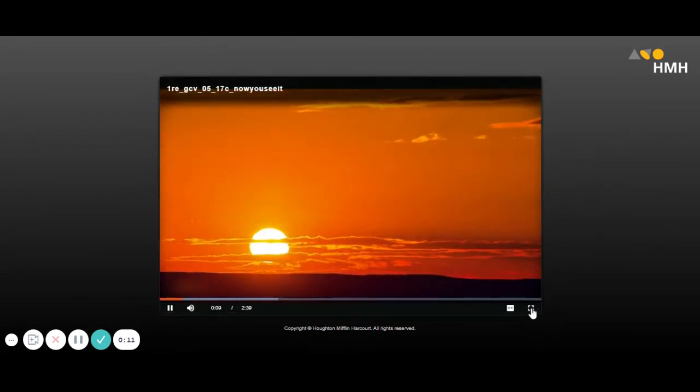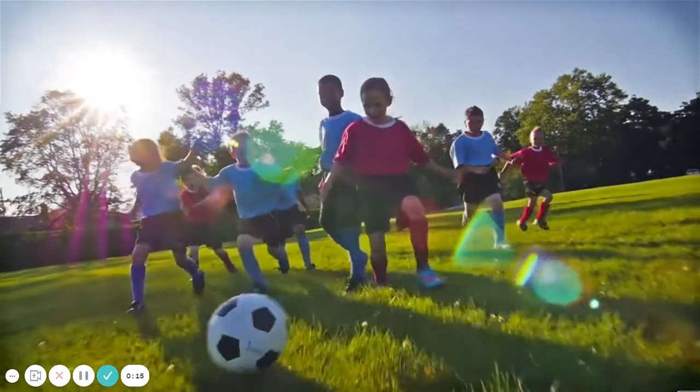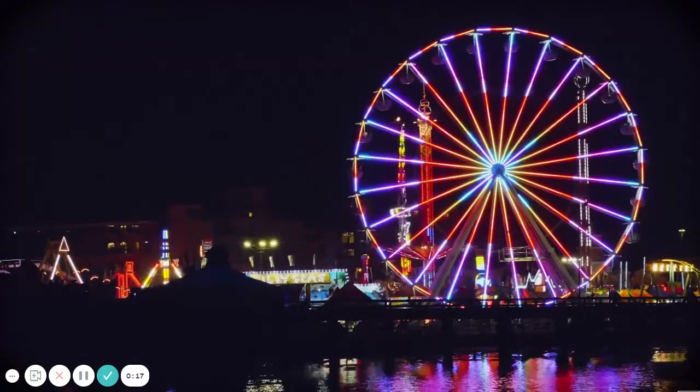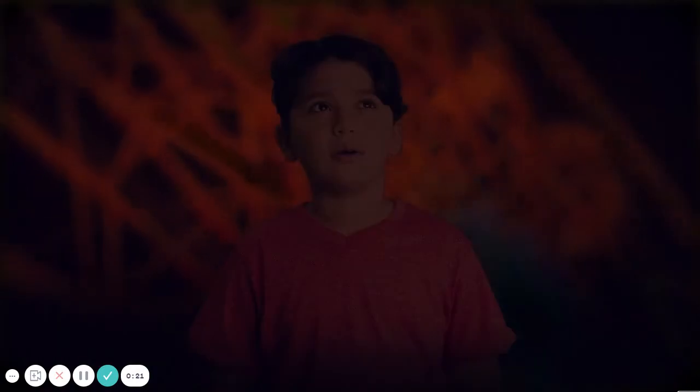Light allows us to see the world around us in the day and at night. Without light we can't see anything. Some types of light happen all by themselves. Light from the Sun helps us to see every day. Oh, that's right, I better put my sunglasses on.